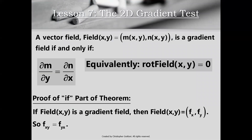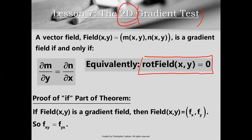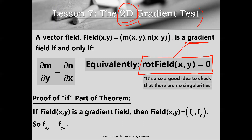Since this video is about gradient fields in three-dimensional space, we need a 3D gradient test. The best way to develop it is to recall how we did the gradient test in two-dimensional space: if the rotation of a vector field in 2D is equal to zero, then we have a gradient field. It's also a really good idea to check that our vector field has no singularities, because singularities can throw a wrench in the works and prevent the gradient field from behaving as expected.